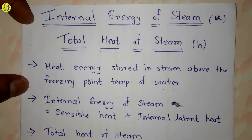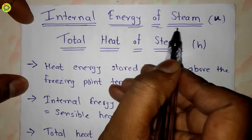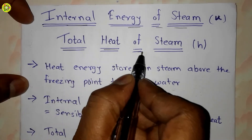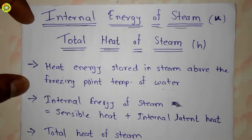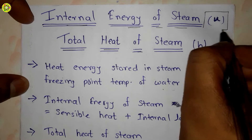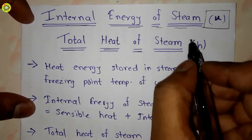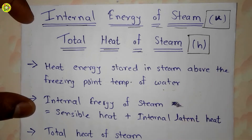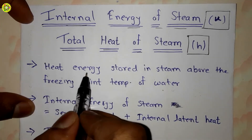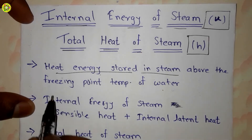Hi students, welcome. In this video we will understand about internal energy of steam and total heat of steam. Internal energy of steam is denoted by small letter u and total heat of steam is denoted by small letter h. The heat energy which is stored in steam above the freezing point temperature of water is called internal energy of steam.